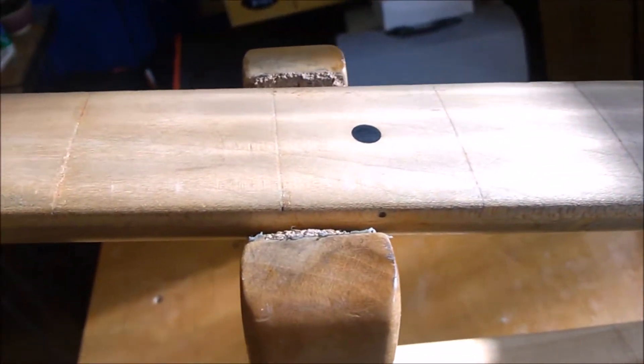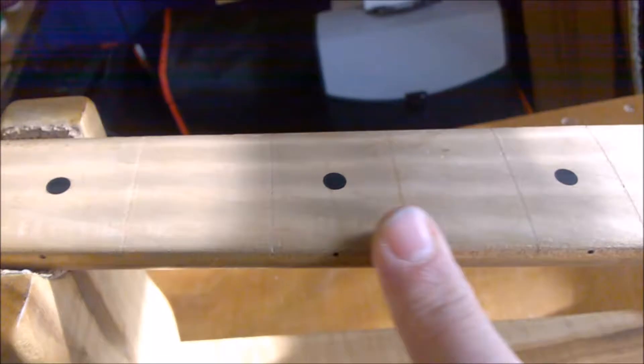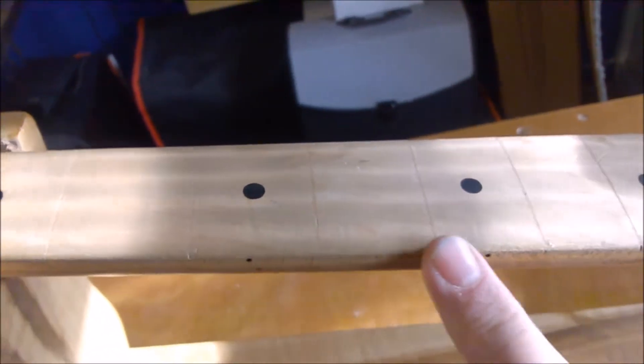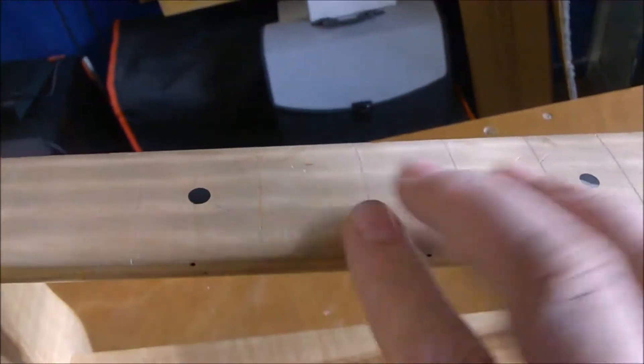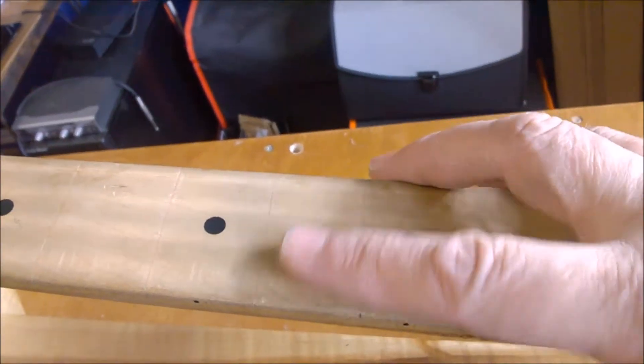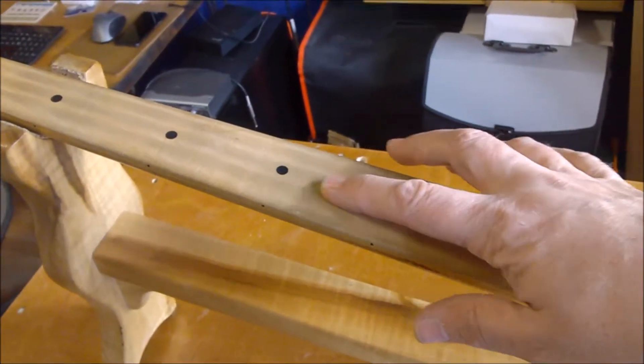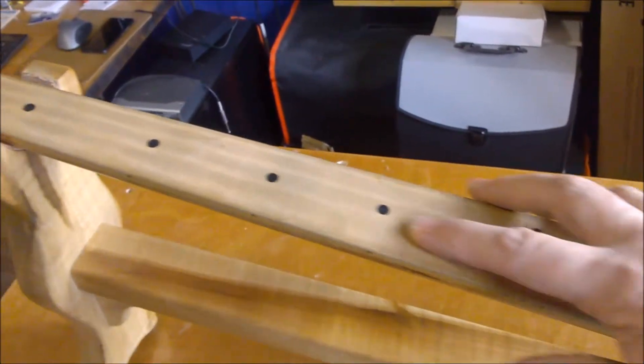Also I'm going to have to sand down the neck for two reasons: whoever's done the work before has kind of rounded this a bit too much and it's not very smooth. When I was checking the radius on the neck, it became apparent that there's a high spot on the top.